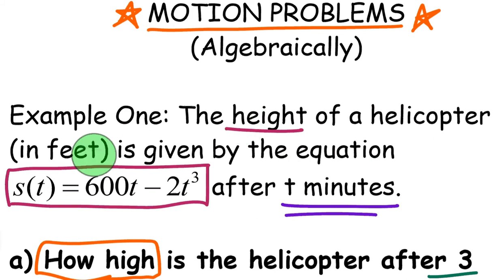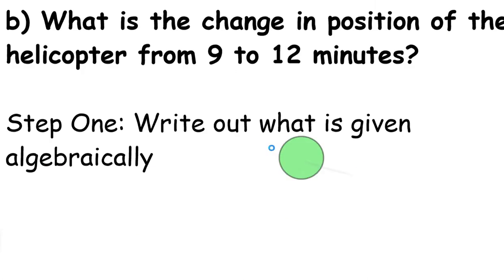The height of a helicopter in feet is given by the equation S(t) = 600t - 2t³ after t minutes. Let's take a look at another question about this helicopter. The next question is: what is the change in position of this helicopter from 9 to 12 minutes?